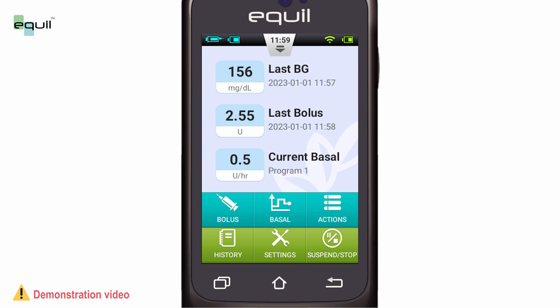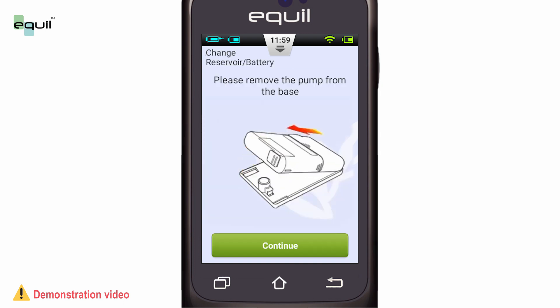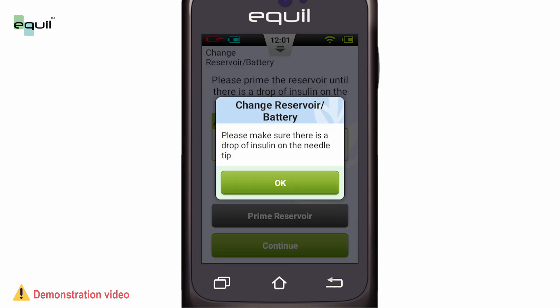In the event that the insulin reservoir runs out of insulin, we should replace it with another. Also, the same procedure will apply when changing the battery. In the home screen, select Action Change Reservoir Battery and an animation will pop up asking you to remove the pump from its base. Now, remove the pump from pump base and select Continue. Changing Battery Reservoir confirmation message will pop up. Select Yes.